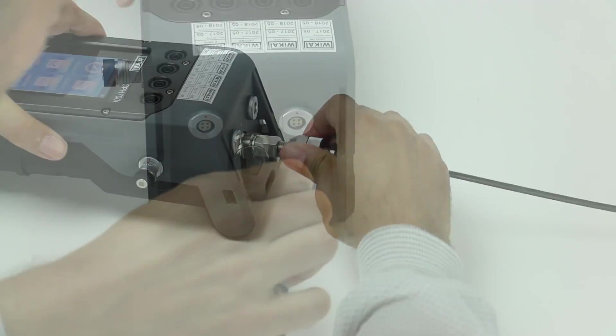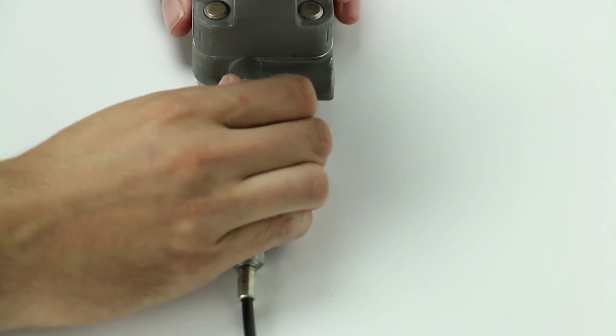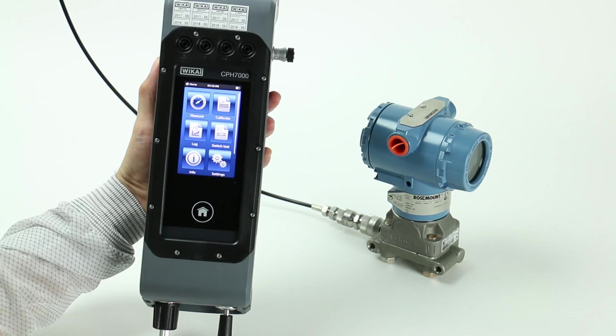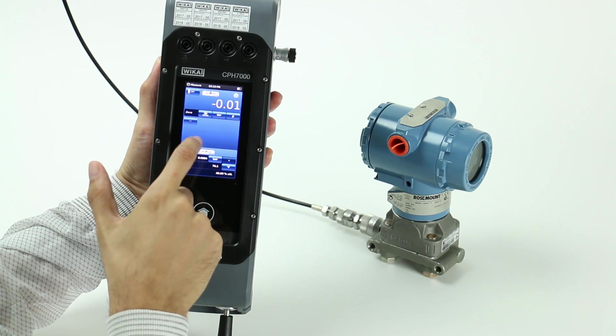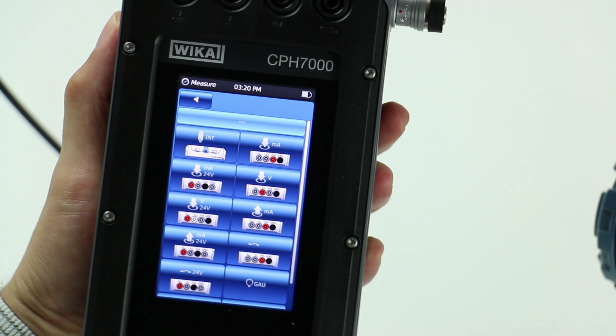The pneumatic output of the calibrator should be connected to the pressure input of the transmitter. The electrical connections are made according to the diagram on the CPH-7000 touchscreen. In this case we need to power the transmitter as well as read the milliamp signal.